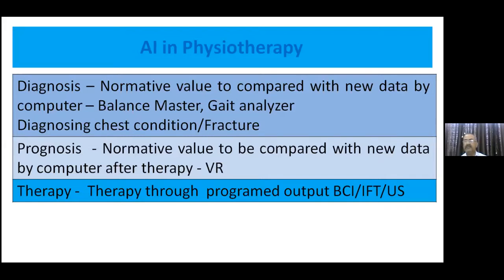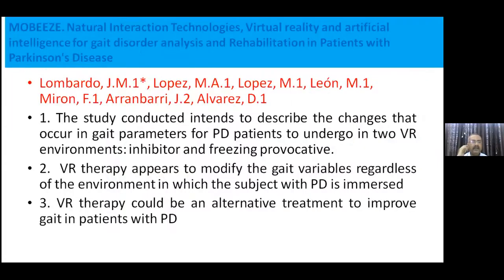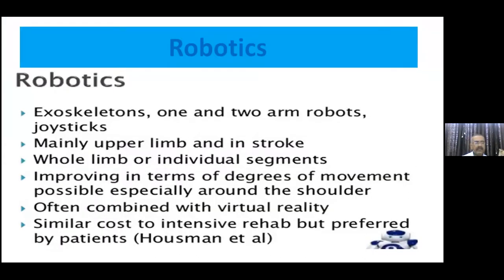Currently, the AI can detect a deficiency and give suggestions, but cannot yet detect the problem on its own — you detect the problem and the machine gives suggestions. Later, machines will detect and treat the problem. Whatever we are doing, some part of AI will gradually become full-fledged AI. A cited study on natural interaction technology, virtual reality, and AI for gait disorder analysis and rehabilitation in Parkinson's disease patients suggests that therapy and AI going hand in hand will be much better for patient recovery.